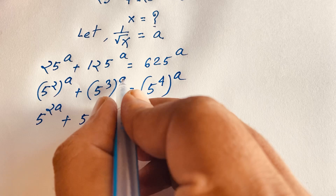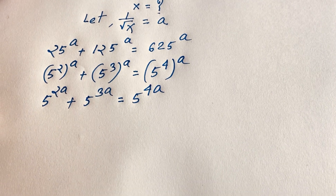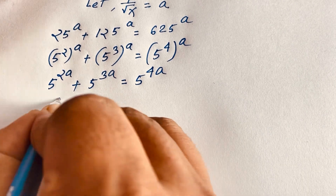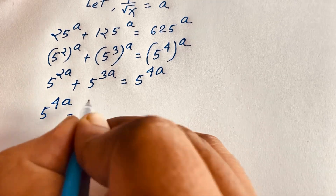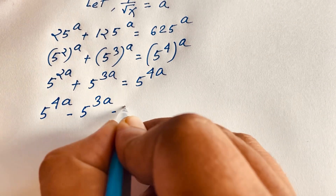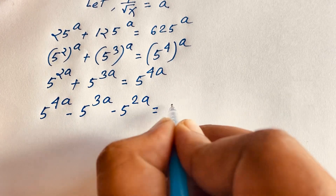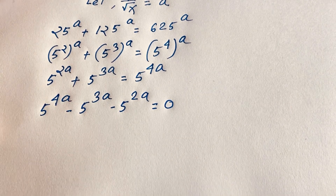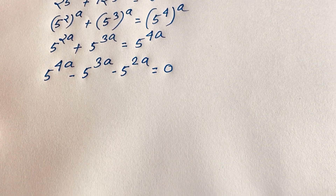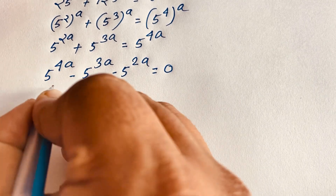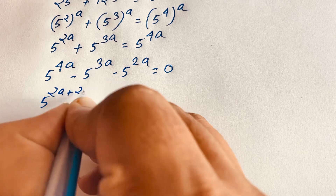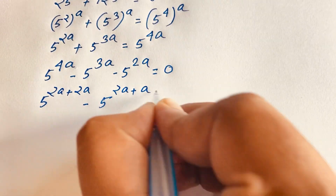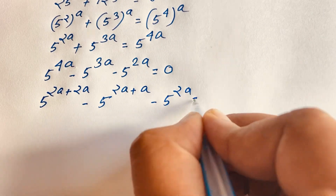I multiply this value by this value. Now, this expression will be rearranged: 5 to the power 4a minus 5 to the power 3a minus 5 to the power 2a is equal to 0. Both terms are moved to the negative side. So, 5 to the power 4a becomes 5 to the power (2a + 2a), minus 5 to the power 3a becomes 5 to the power (2a + a), and minus 5 to the power 2a, all equal to 0.